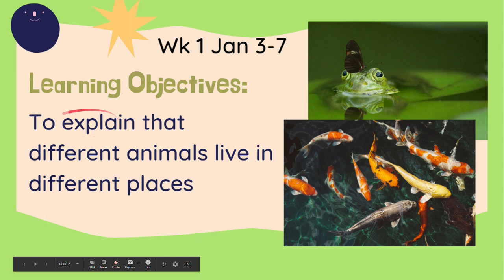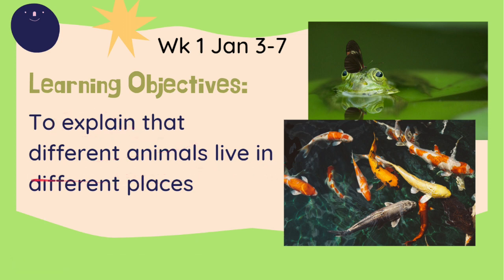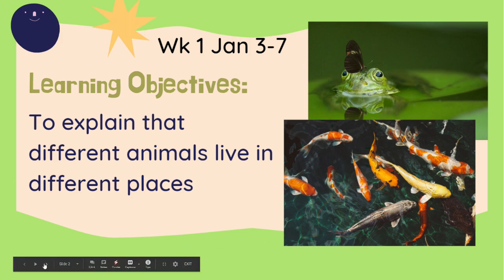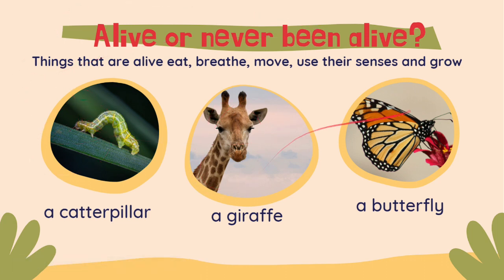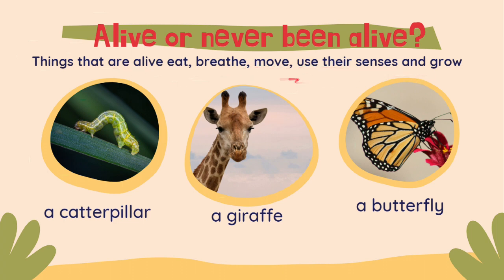You will also learn and explain that different animals live in different places. Remember that things that are alive eat, breathe, move, use their senses, and grow — such as the caterpillar, a giraffe, and a butterfly. They are considered living things. The term living thing refers to things that are now or once were alive, whereas a non-living thing is anything that was never alive.